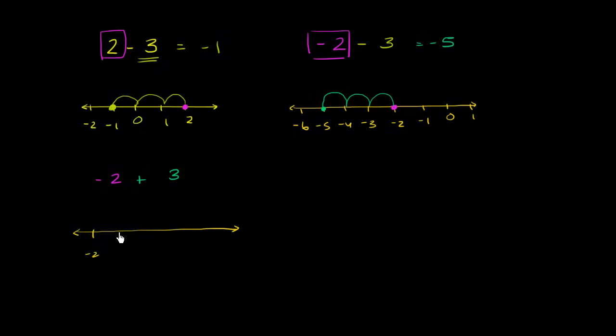And let's say that this is negative 2, negative 1, 0, 1, and 2 again. We're starting at negative 2. We're starting 2 to the left of 0. So we're starting at negative 2.